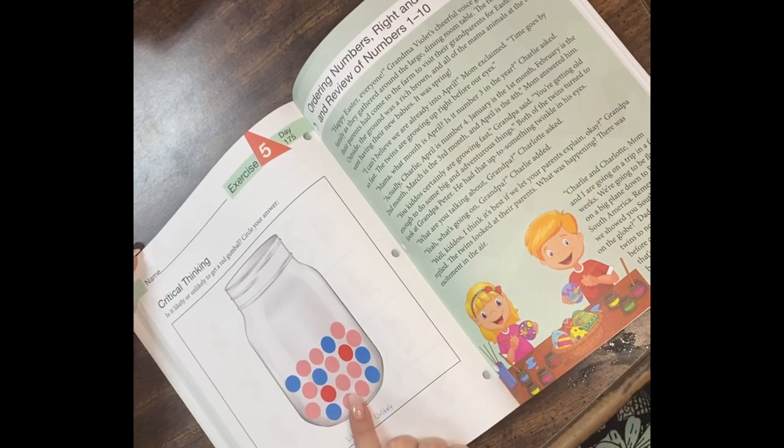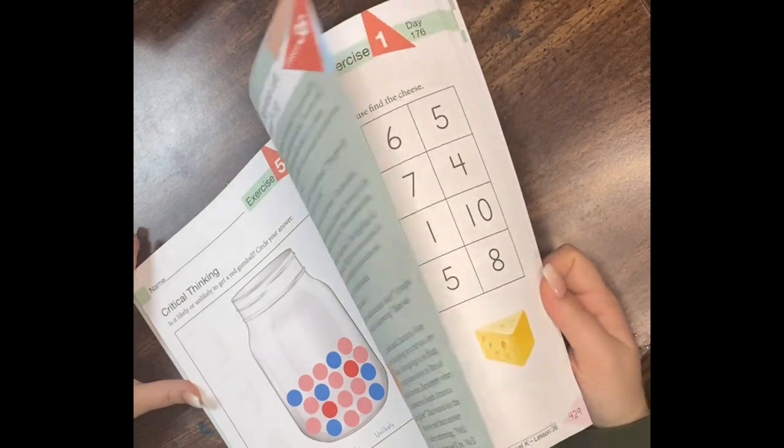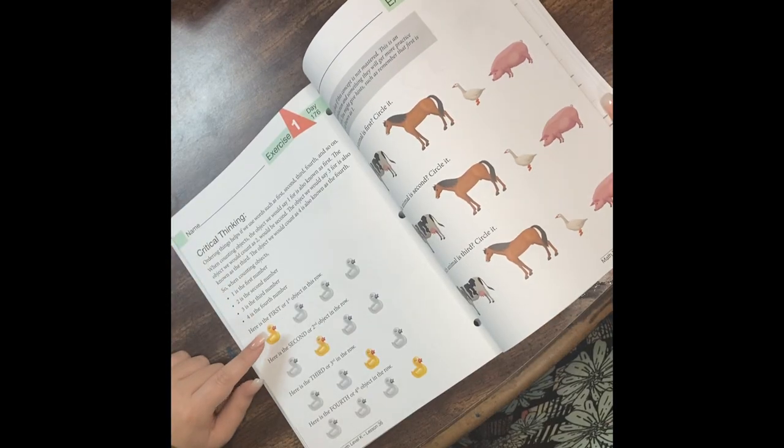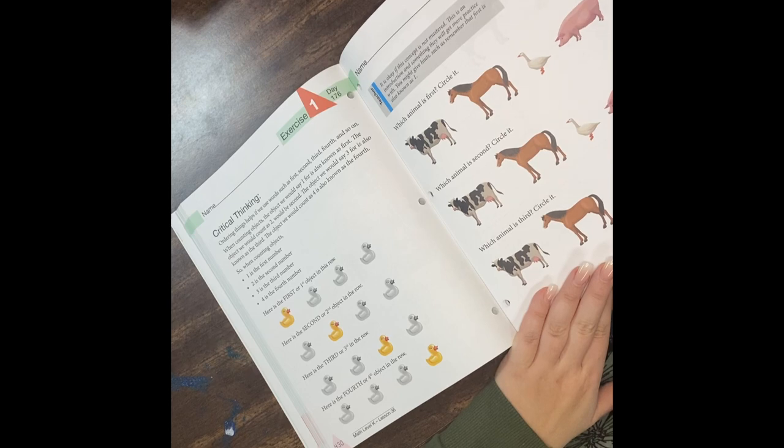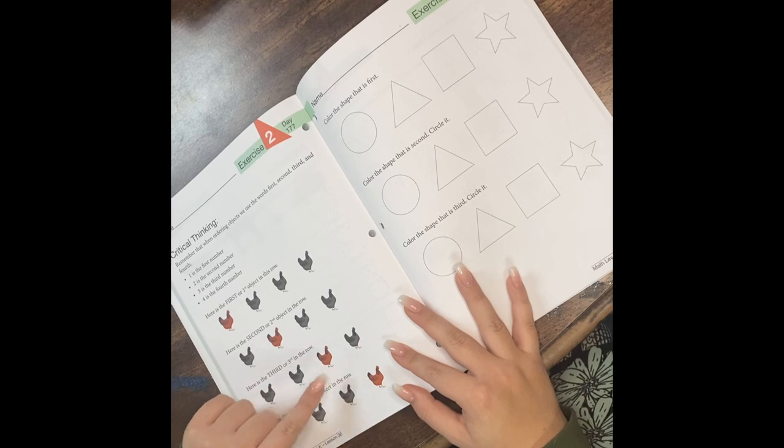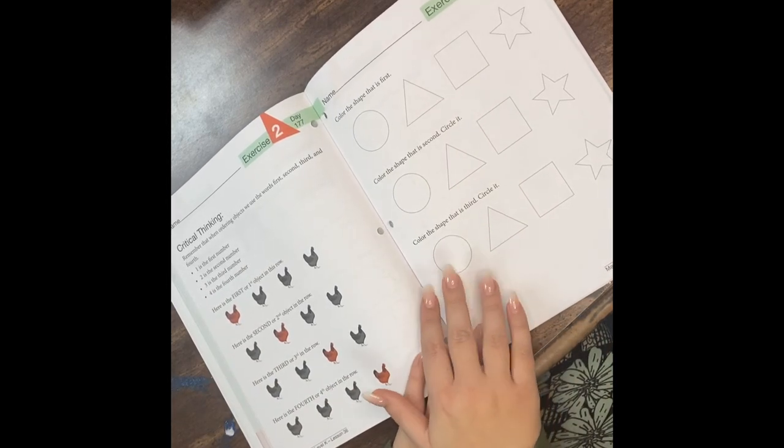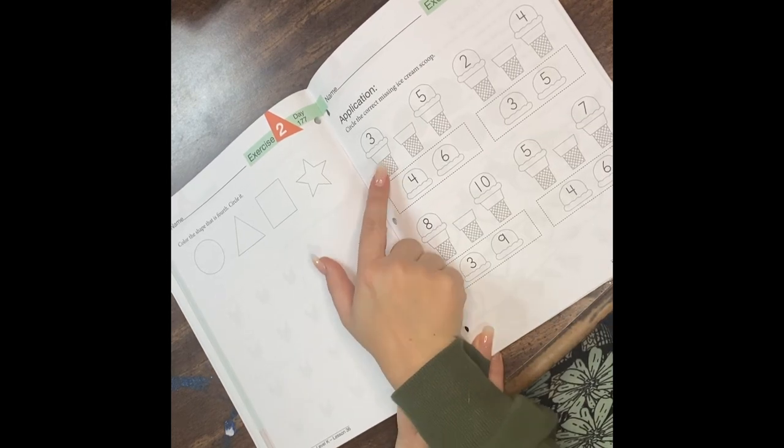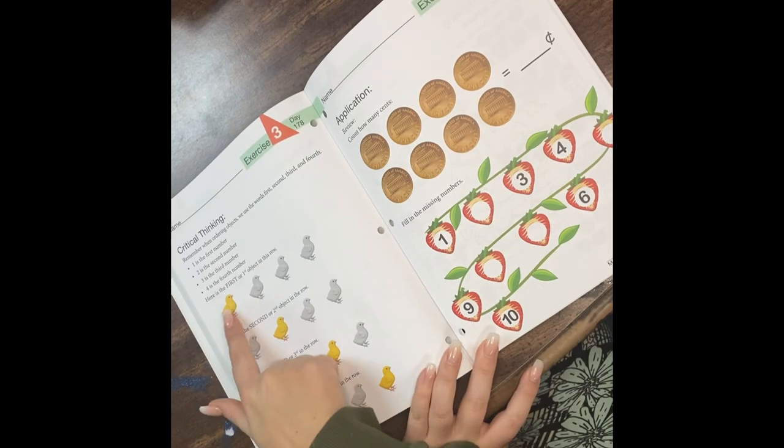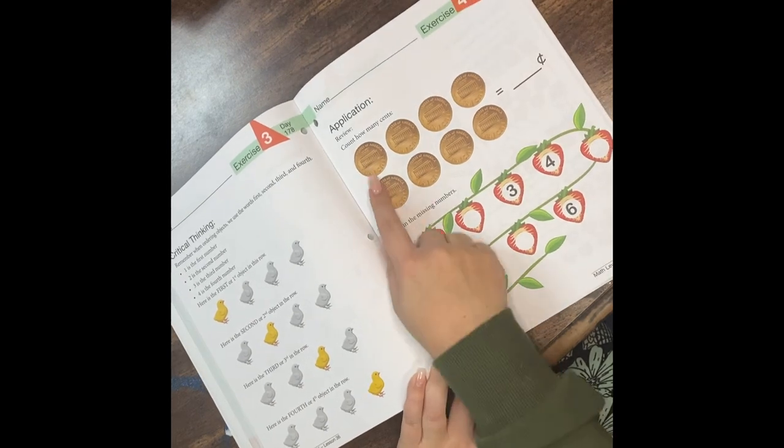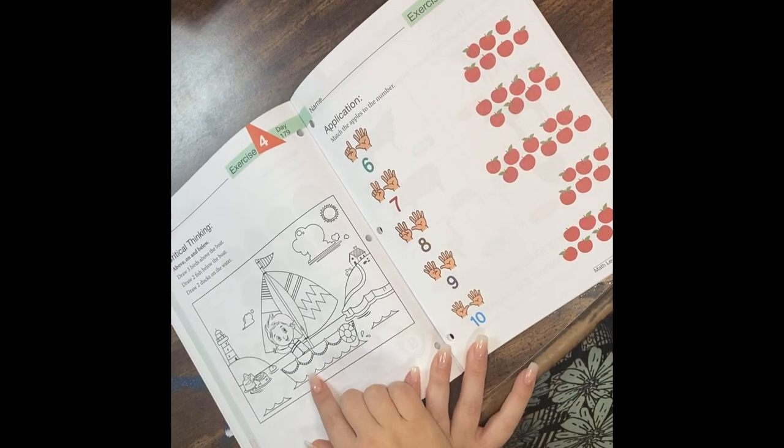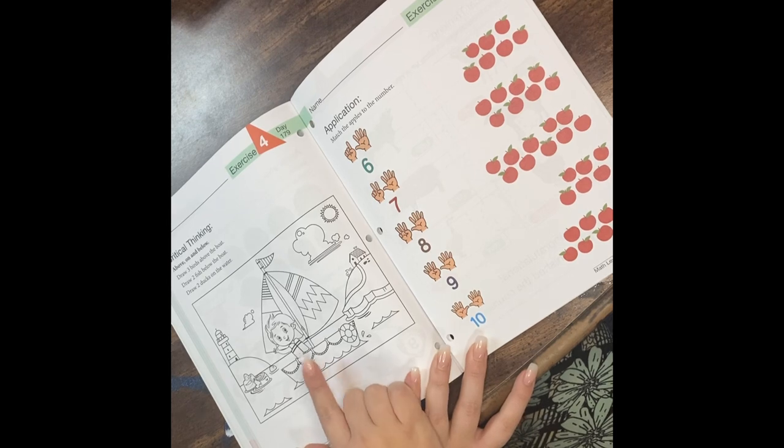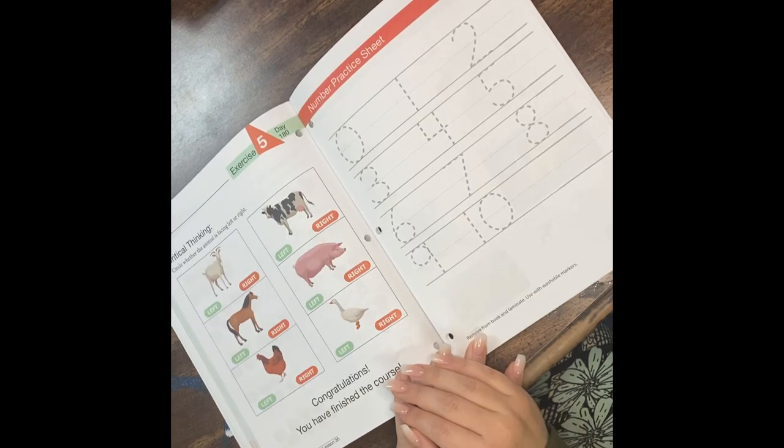More possible versus impossible, more likely versus unlikely. Review of symmetry and matching the other side of the picture. The final lesson is about right and left. She actually already knows right and left unbelievably—I did not teach her this. They teach about first, second, third, and fourth. Little introduction to money here, telling her that a penny is one cent. Fill in the missing numbers on the strawberry vine. Critical thinking: draw three birds above the boat, two fish below the boat, and two ducks on the water. Circle whether the animal is facing left or right.